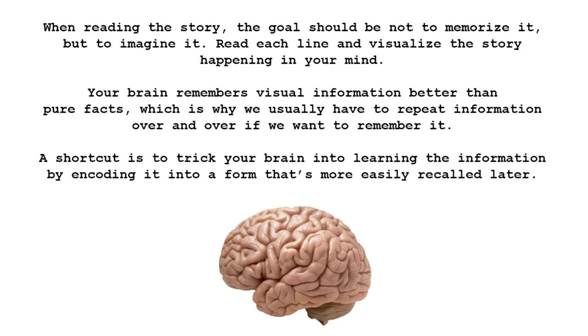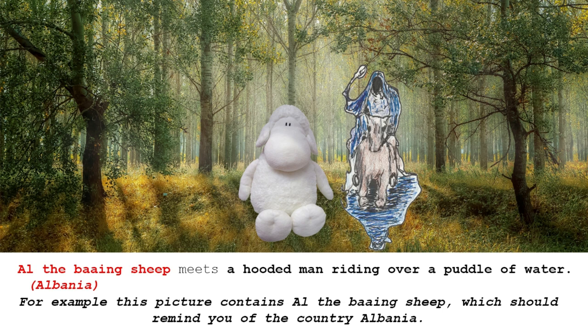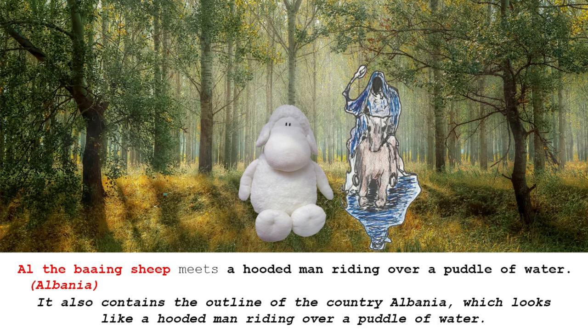Read each line and visualize the story happening in your mind. Your brain remembers visual information better than pure facts, which is why we usually have to repeat information over and over if we want to remember it. A shortcut is to trick your brain into learning the information by encoding it into a form that's more easily recalled later. For example, this picture contains Al, the baaing sheep, which should remind you of the country Albania.